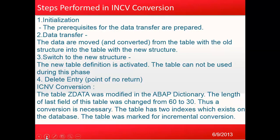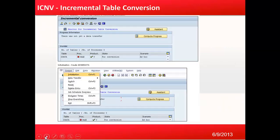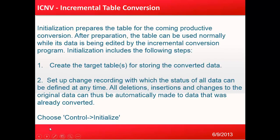In this example, the ICNV conversion involves table Z data that was modified in the ABAP Dictionary, where the length of the last field was changed. Here you can see an incremental conversion taking place. We need to initialize it first. Initialization prepares the table for the coming productive conversion. After preparation, the table can be used normally while its data is being edited by the incremental conversion program.